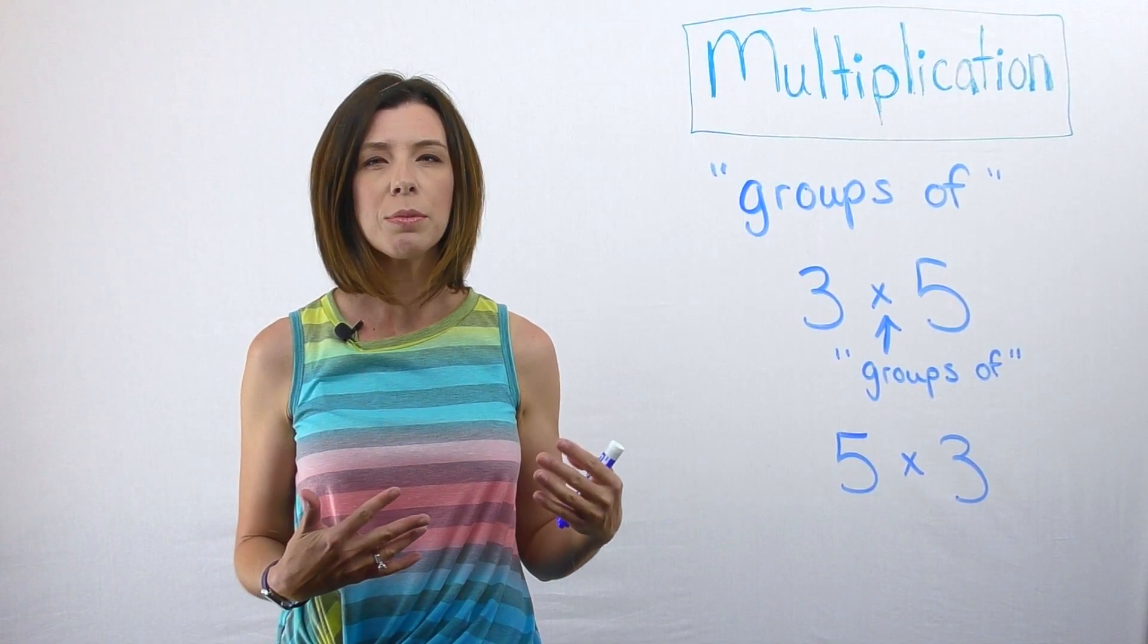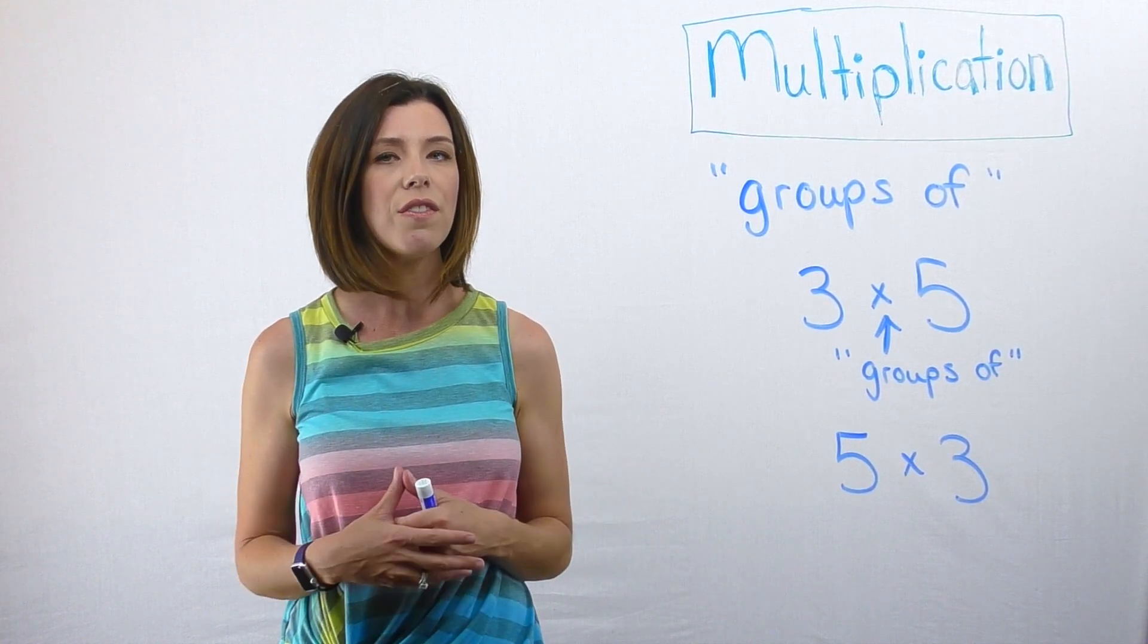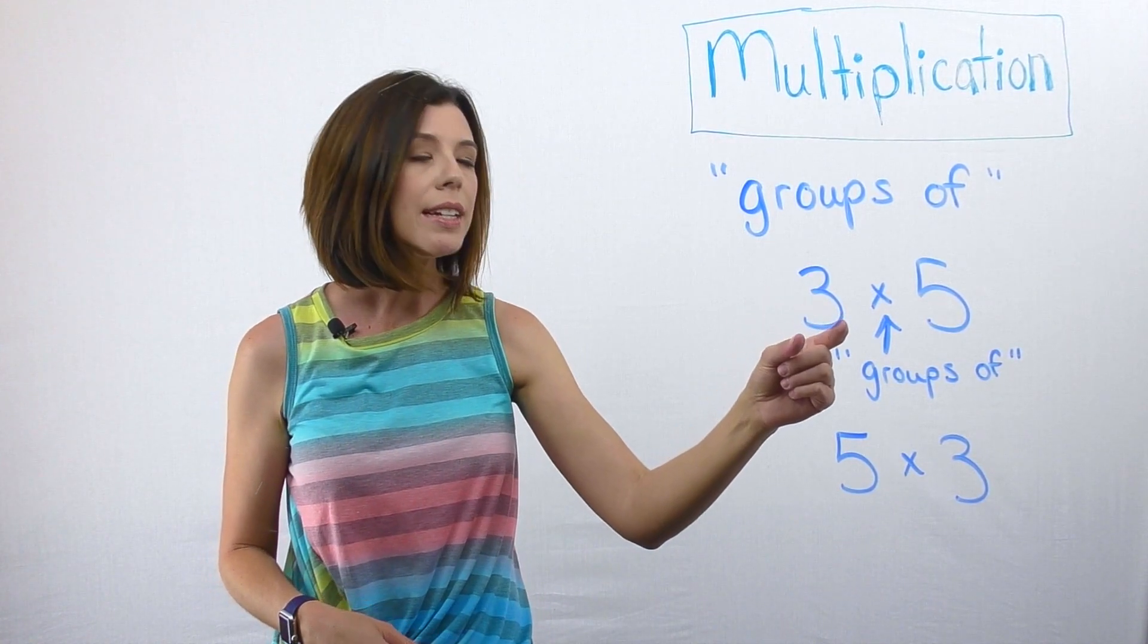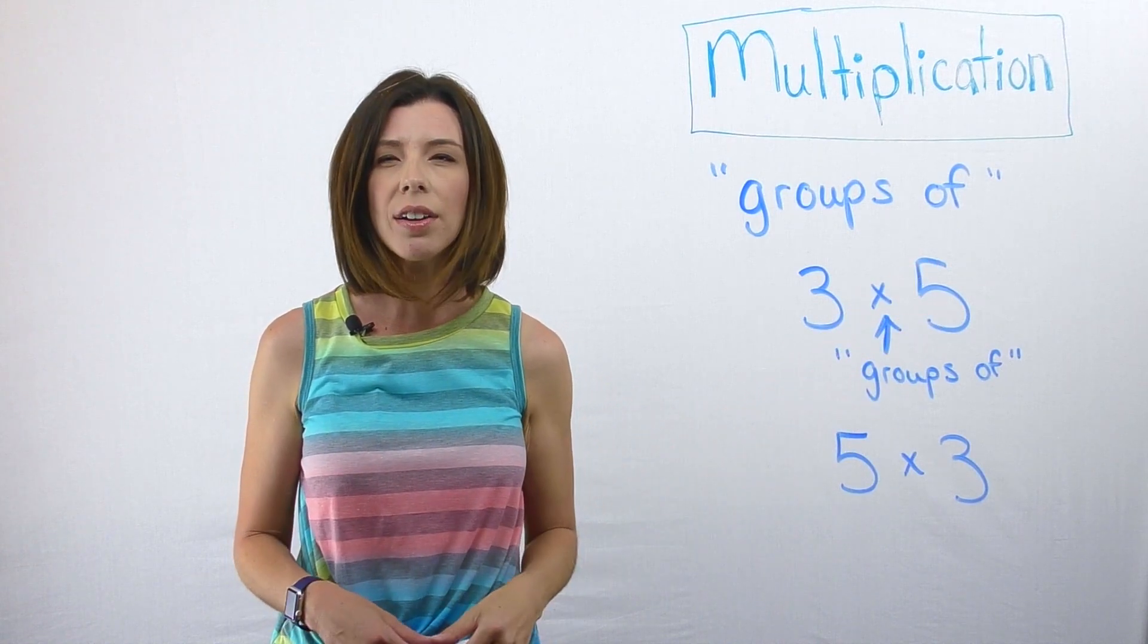Think about this in terms of rows. We're saying three rows of five versus five rows of three. That's going to look very different.